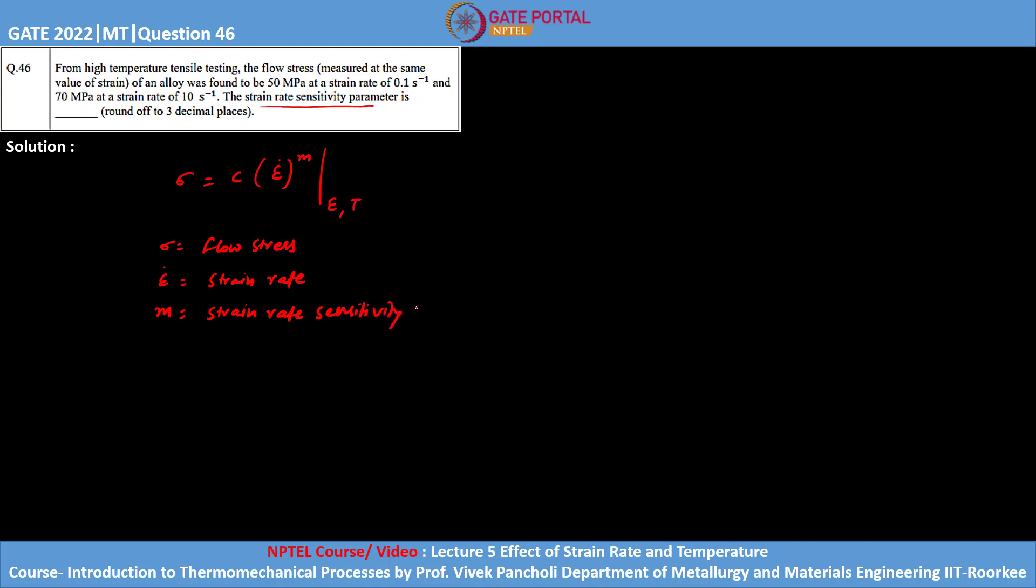Two flow stresses and two strain rates are given in this problem. Let us denote σ₁ = 50 MPa with strain rate ε̇₁ = 0.1 per second. In case 2, σ₂ = 70 MPa with strain rate ε̇₂ = 10 per second.